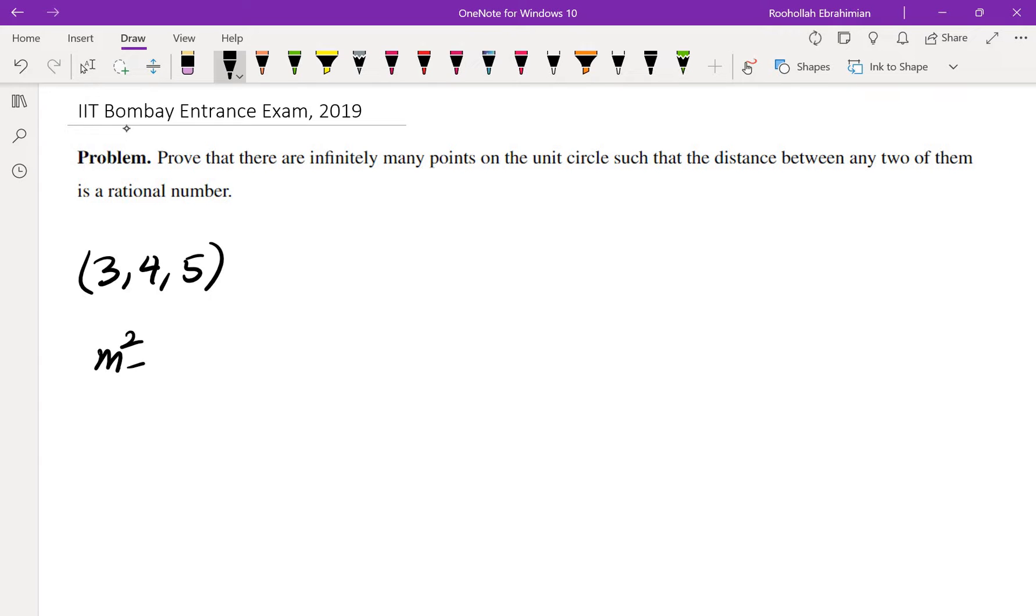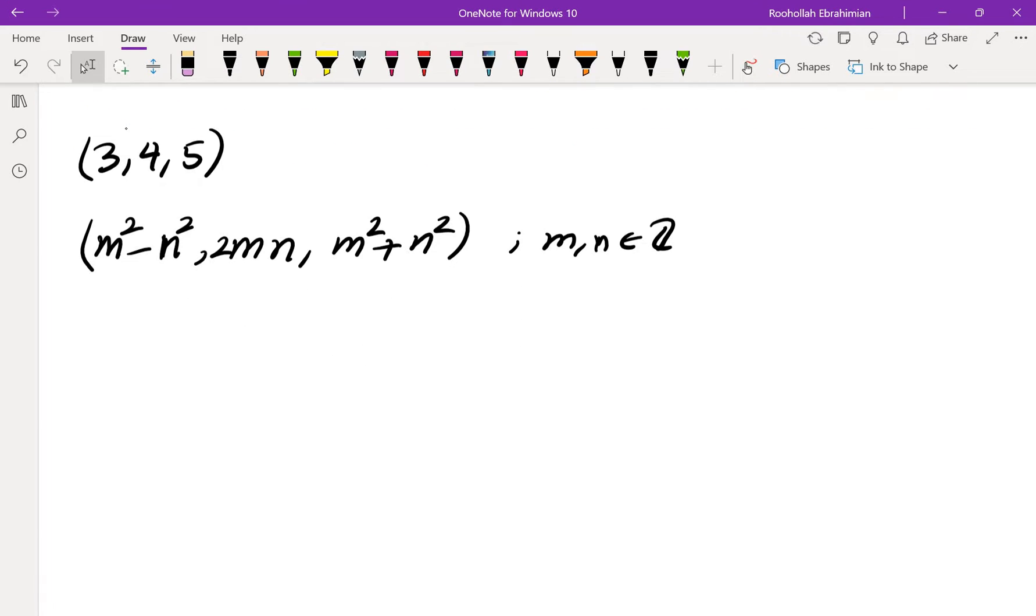All of the Pythagorean triples that are primitive are going to be m squared minus n squared, 2mn and m squared plus n squared, where m and n are two integers. There's also some conditions on m and n but that really doesn't matter for our purpose.